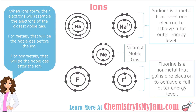Sodium starts with one valence electron. When it gives that away, the whole outer energy level drops, leaving sodium with 10 electrons, 8 of which are valence electrons — just like neon. So sodium's ion looks like neon, its nearest noble gas. For metals, that will be the noble gas before the ion. For nonmetals, it will be the noble gas after, because nonmetals gain electrons.